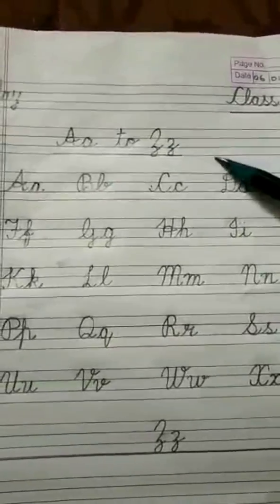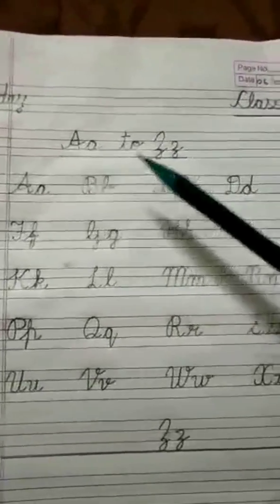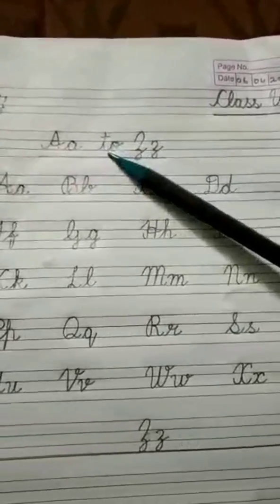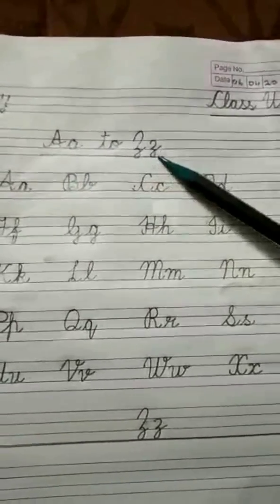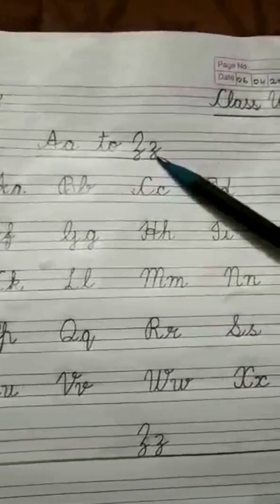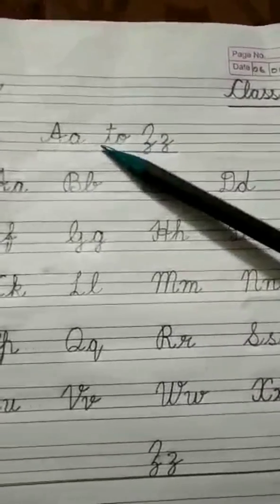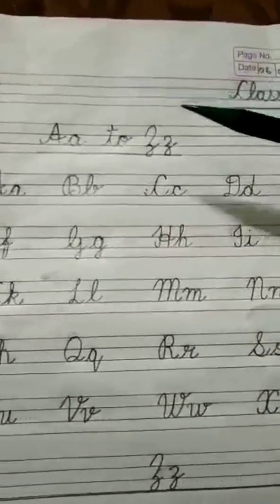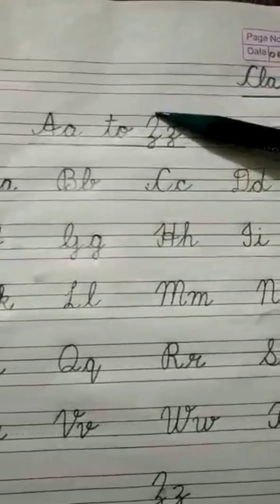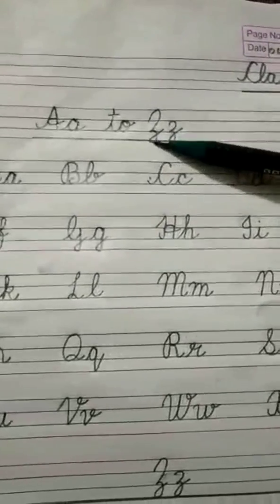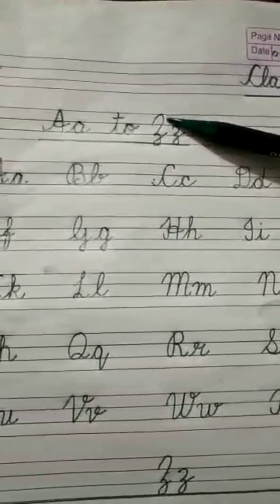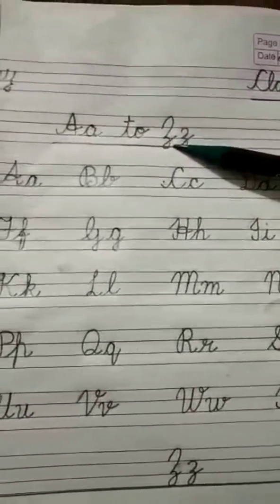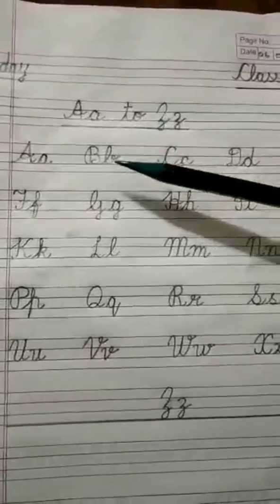Then in the next line, in the center of the next line, you will write capital A small a to capital Z small z. And please ensure that you leave proper spacing between the alphabets. And also make sure that you do not cross the line. Neither should you write inside the line. It should be exactly between the lines. Now let's move on to the next line.